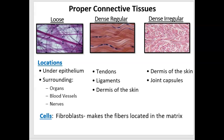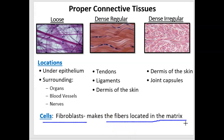In all cases, the cells are fibroblasts, and these cells are making fibers that are located in the matrix. I'm going to circle in yellow the cells in each of the three types of connective tissue proper.